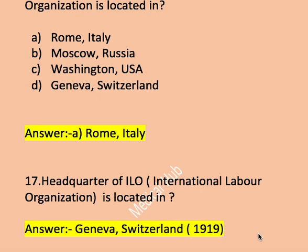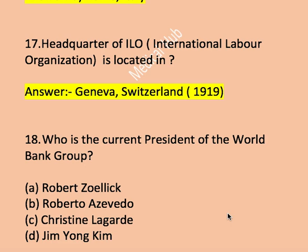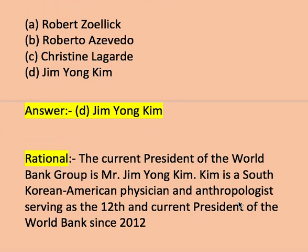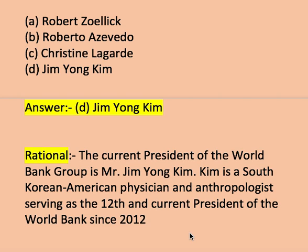Next question, question number eighteen: who is the current president of the World Bank Group? Options: A Robert Zoellick, B Roberto Azevedo, C Christine Lagarde, D Jim Yong Kim. The current president of the World Bank Group is Mr. Jim Yong Kim, a South Korean-American physician and anthropologist serving as the 12th and current president of the World Bank since 2012.